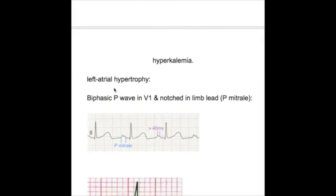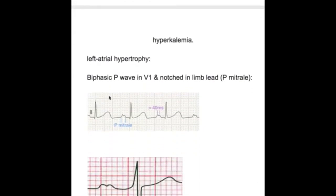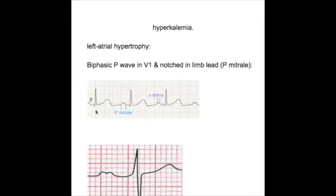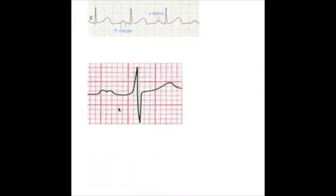What do we see in left atrial hypertrophy? There is a biphasic P wave in lead V1 and notched in limb leads. This is known as P mitrale. When does this condition occur? It occurs in left atrial hypertrophy, in mitral stenosis with back pressure from left ventricle to the left atrium: P mitrale, biphasic and notched P wave.